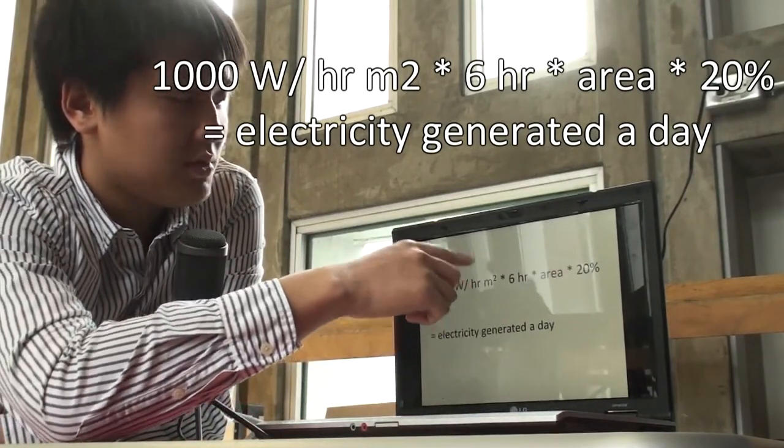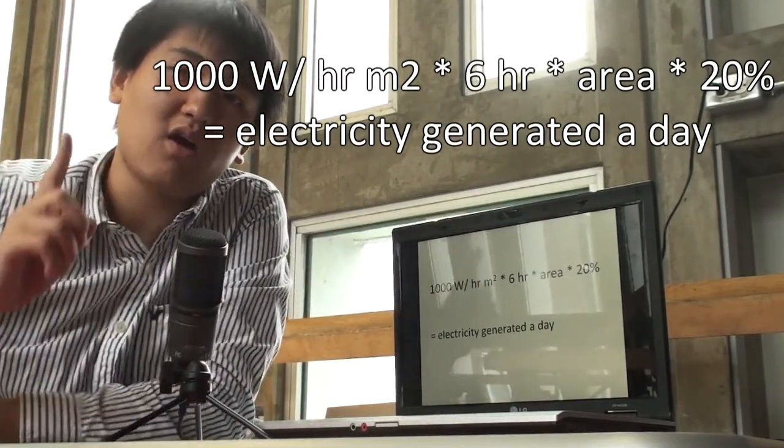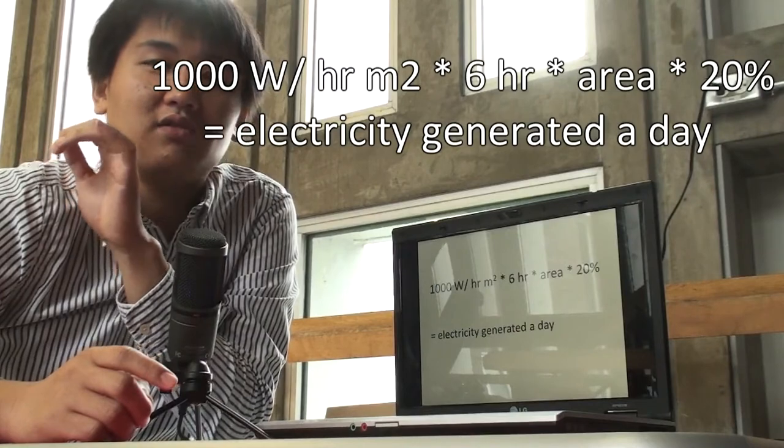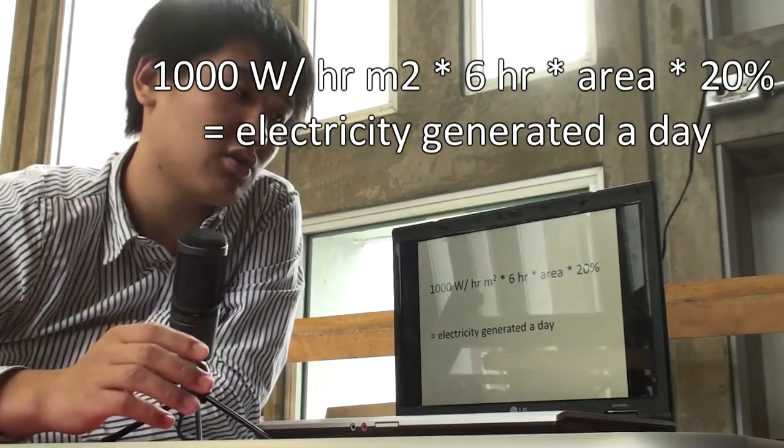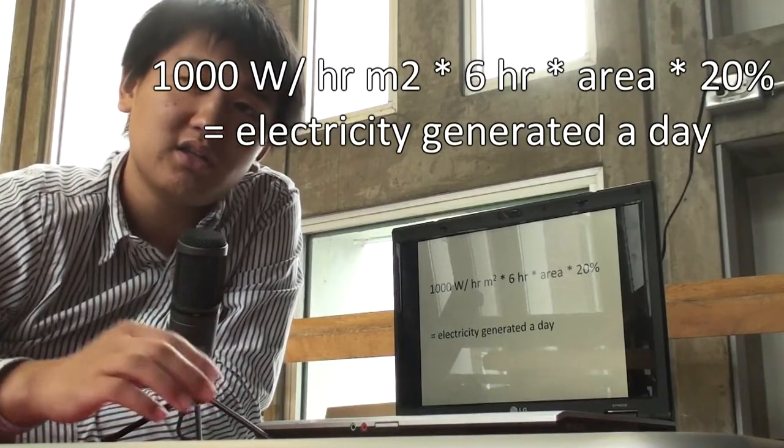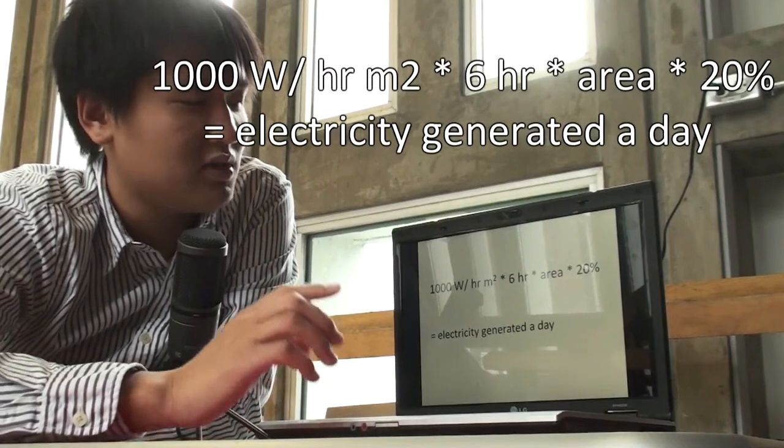1,000 watts per hour per meter square is the amount of energy on 1 meter square area in 1 hour. 6 hours means there are only about 6 hours of sunlight which has high enough light intensity to run the solar panel. 20 percent is the efficiency to convert solar energy to electricity by solar panels. The final factor we need to know is the area to be attached for solar panels on the Canal Building. We will be able to calculate how much electricity is generated a day.